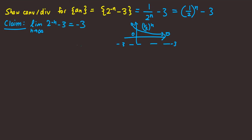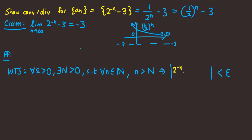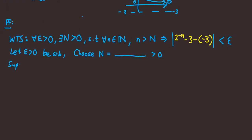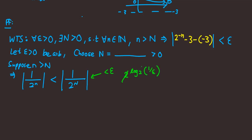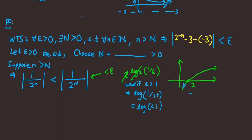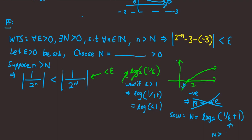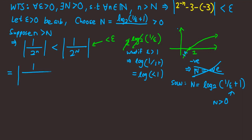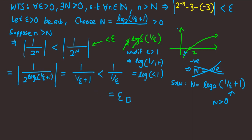We use the epsilon-N formulation to prove this. We want to show that for all epsilon greater than 0, |A_n - L| is less than epsilon. We let epsilon greater than 0 be arbitrary and choose N — blank for now — then suppose the antecedent. To get epsilon to appear we use log base 2 of (1/ε). However, if epsilon is greater than 1 we get something less than 1 inside the log, and the log of something less than 1 is negative, so we add 1: N = log base 2 of (1/ε) + 1 to ensure N is always positive.